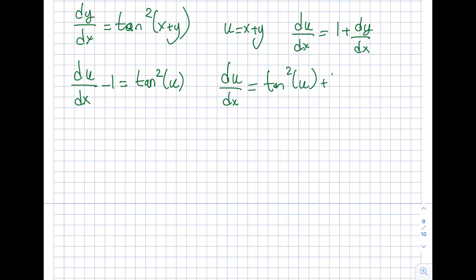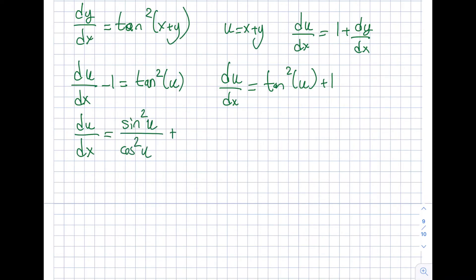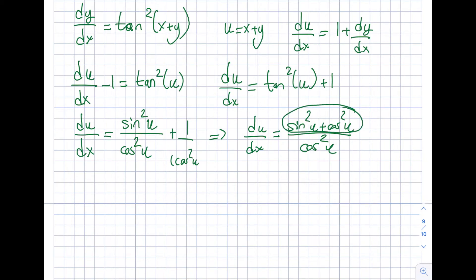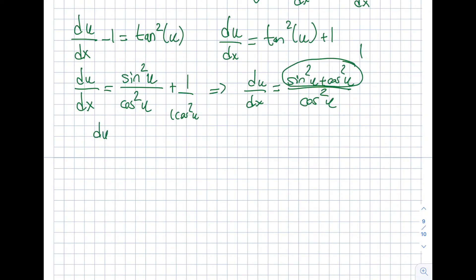Rather than integrating tan²(u) + 1 directly, I'll expand using trig definitions. Writing tan²(u) as sin²(u)/cos²(u) and adding 1, then multiplying through by cos²(u), gives du/dx equals (sin²(u) + cos²(u))/cos²(u). Since sin²(u) + cos²(u) = 1, this simplifies to du/dx equals 1/cos²(u).